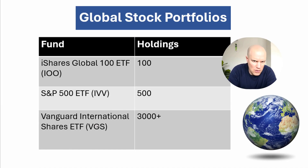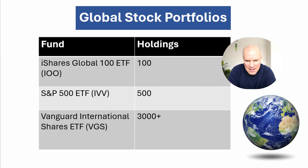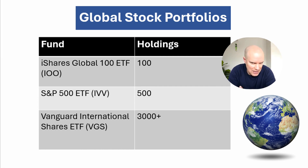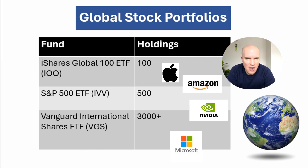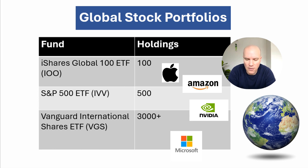Let's start with some all-in-one portfolios that include access to some of the world's best companies and stocks from across the world. If you want to diversify global exposure without picking individual markets or thinking too hard about what stocks you're going to invest in, three examples I have here are IIO, IVV, and VGS. They all invest in similar top-tier companies — it's just whether you want the top 100, the top 500, or the top 3,000 companies in your portfolio.